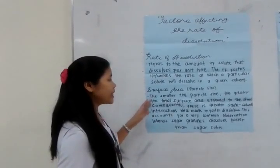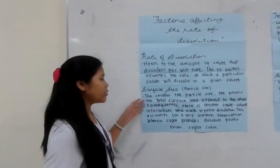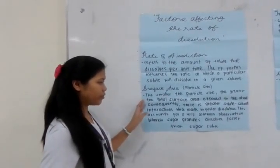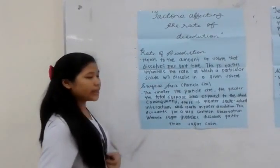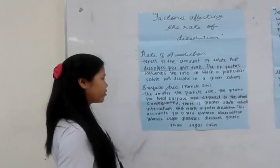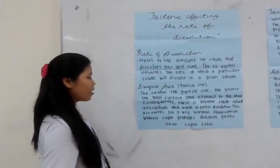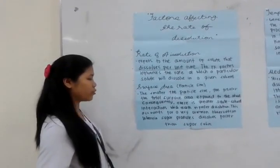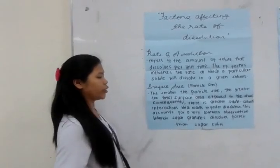Surface area or particle size. The smaller the particle size, the greater the total surface area exposed to the solvent. Consequently, there is greater solid-solvent interaction which results in faster dissolution. This accounts for a very common observation wherein sugar granules dissolve faster than sugar cubes.